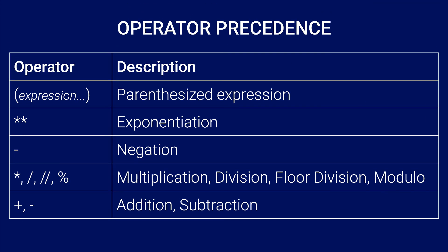Here is a table that shows the order of precedence from highest to lowest. Parenthesized expressions have the highest precedence, followed by exponentiation, followed by negation, followed by multiplication, division, floor division, and modulo. These four operations have the same level of precedence, so whenever we encounter them together, we just go from left to right. And then finally, addition and subtraction have the lowest precedence in this set. Similarly, the order of successive addition and subtraction operations is resolved by going from left to right.